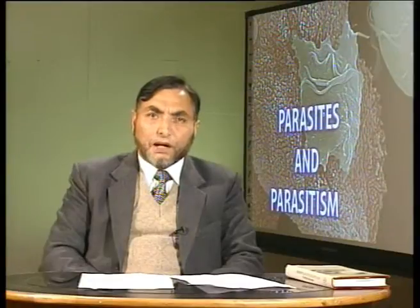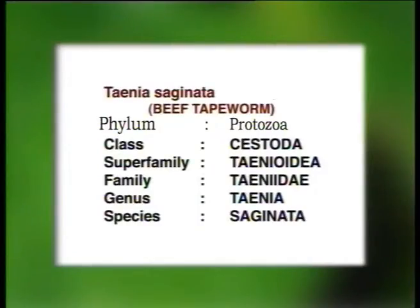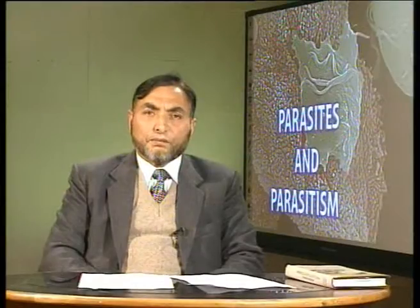A parasite may belong to phylum Protozoa, or it may belong to other phyla in the zoological kingdom like Platyhelminthes, Nemathelminthes, or even phylum Arthropoda. We shall be discussing today an interesting group of these parasites which live as endoparasites in our intestines or the intestines of other animals, with a bad effect on the host. You might have heard about the long worm up to 10 meters in length — that is Taenia saginata, a parasite belonging to Platyhelminthes.